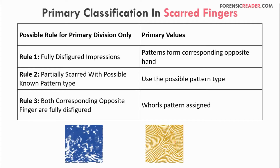For scarred fingers, the possible rules for primary division are: Rule one — fully disfigured impression. If you can't identify the pattern on a finger, use the corresponding opposite hand's pattern. So if it is a right thumb, use the values of the left thumb. Rule two — partially scarred with a possible known pattern type. If the finger is scarred from the edges but you can still identify it as a whorl or any pattern, use the same pattern type.